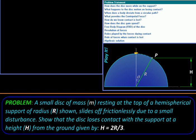Here we will be solving a numerical problem where a small disk of mass M is resting at the top of a hemispherical support of radius R. It slides off frictionlessly due to some small disturbance and loses contact at some point from the hemisphere. We have to show that it loses contact at a height h given by 2R upon 3.